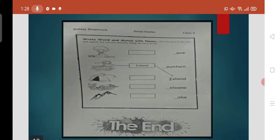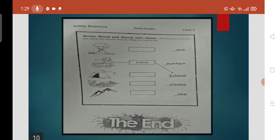Now move on to the last page. Write word and match with the name. Students, you can see left side there are pictures and right side there are names, but the first alphabet is missing. Just like if we look at Iceland. Now if we look at the right side, the arrow is showing there is no mention of I. So this is called Iceland.